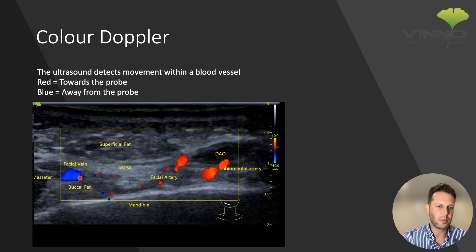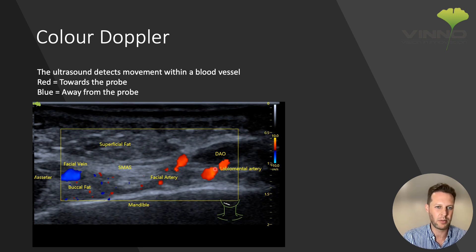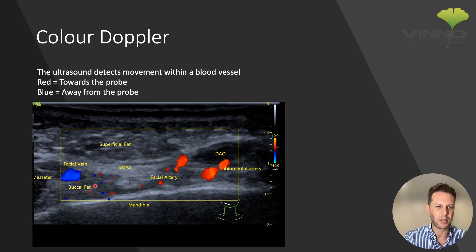Looking at this next image, we've got the facial vein, which just happens to be blue on this image, and the facial artery, and we've also got the labiomental artery — so we're in the lower part of the face. You can see the position of the probe. We've got a cross section or short axis of the DAO, some superficial fat, the SMAS which is connective tissue shown as this bright white line, and then deep to this we've got the mandible, the masseter on the left, and the deep fat under the facial vein.